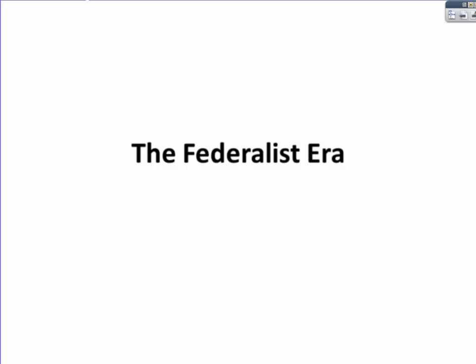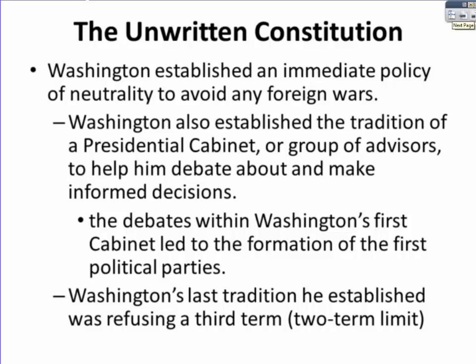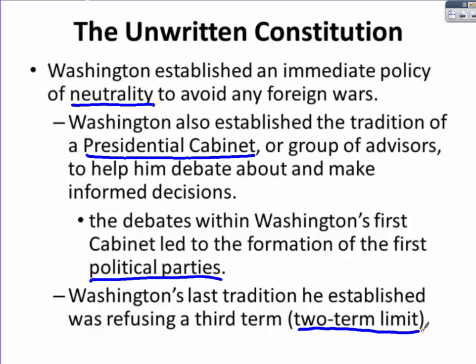To get started with the Federalist Era, you must review the unwritten Constitution. Washington establishes an immediate policy of neutrality and also establishes the Presidential Cabinet. The debates within Washington's first cabinet lead to the formation of the first political parties. When Washington finishes his second term, he refuses a third term, establishing a tradition of a two-term limit. None of these things are written in the Constitution, but nonetheless all of them take place.